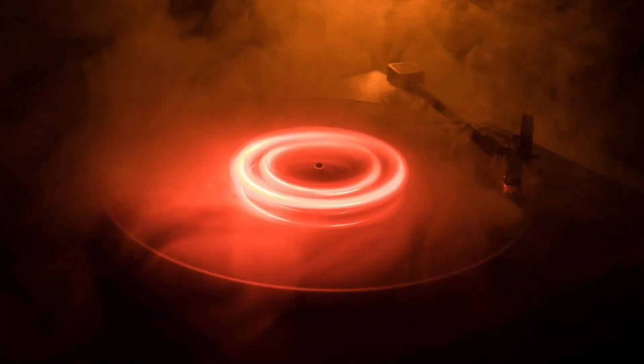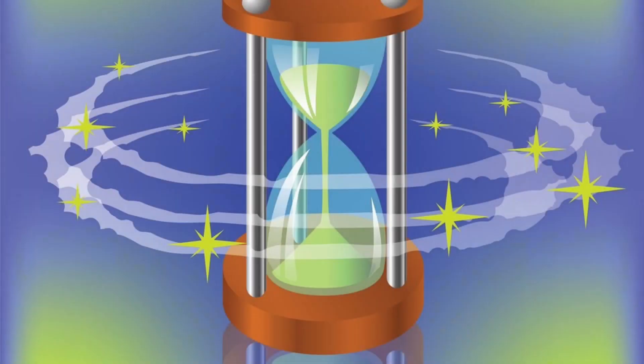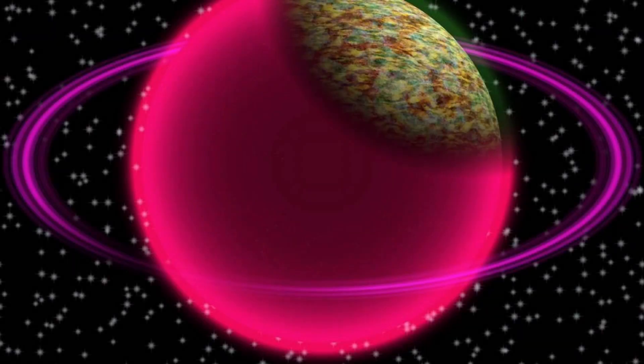Formation of protoplanetary disk: surrounding the young sun, the remaining material in the disk began to clump together due to gravitational forces. These clumps, called planetesimals, eventually grew into protoplanets.